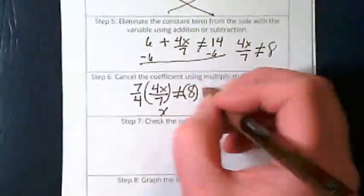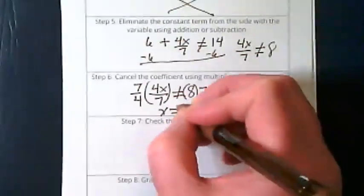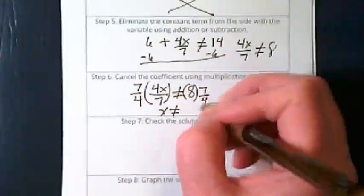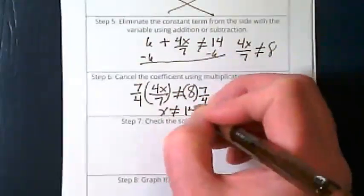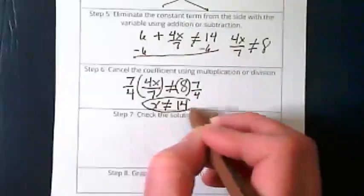So that means x is not equal to... It is 14. 8 times 7 divided by 4 is 14. I did use my calculator when I did that. That's our solution.